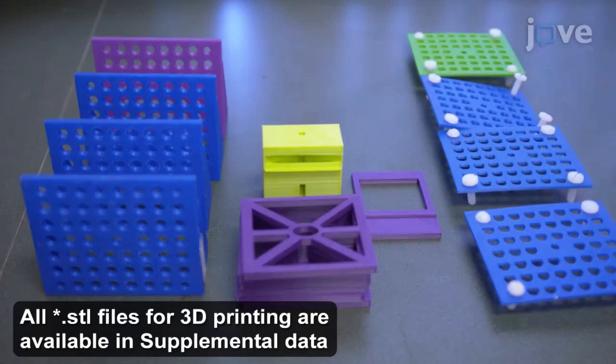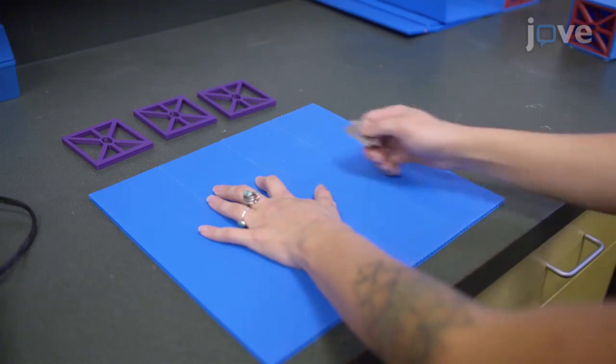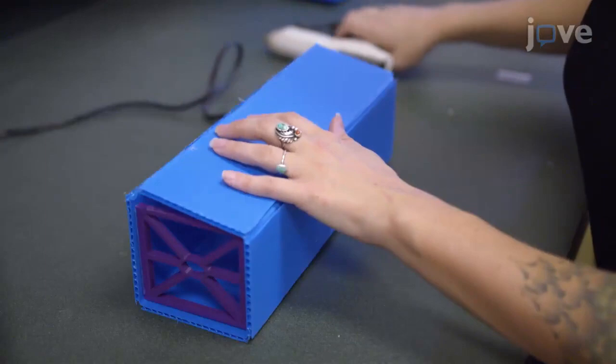With three platform supports and a 33 by 30 centimeter piece of corrugated plastic, use hot glue to assemble two tube rack platforms per channel being constructed.